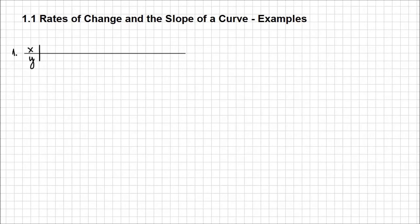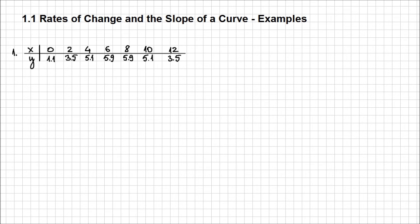Hello. Now, since we know what a slope of a curve represents and we know the difference between the average rate of change and the instantaneous rate of change, let's have a look at what type of problems we can solve. We are pretty limited because all we discussed is the concepts without actually getting into any detail. We haven't discussed any algebraic formula, but that doesn't mean that we cannot solve any problem. So, let's have a look at this example in which, as you can see, I have a set of values.